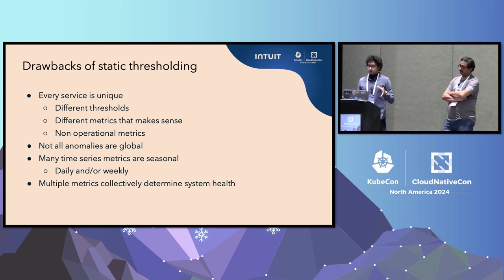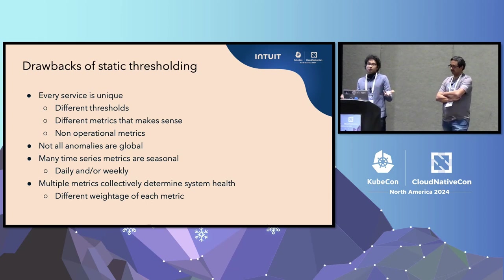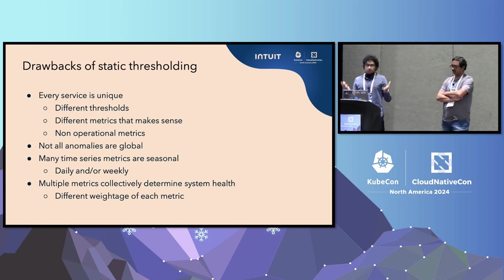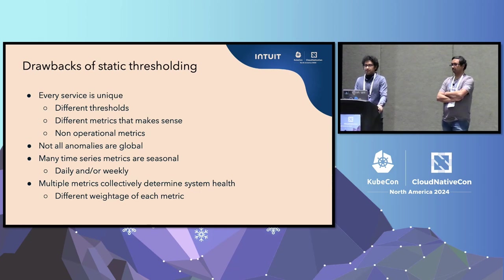Multiple metrics collectively determine system health. It's not just one metric — it's a coherent mechanism where all these different metrics determine system health in a multivariate fashion. They might not be of equal weightage. For example, error rate might be the most important metric, getting 30% weightage, while CPU and memory might get only 10% each.